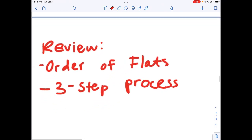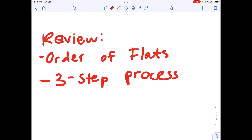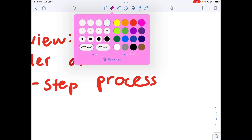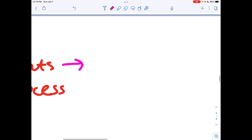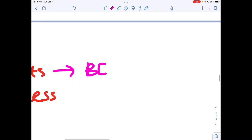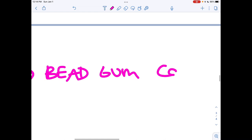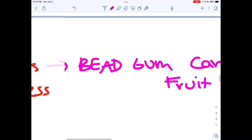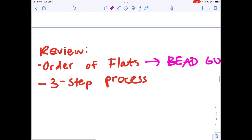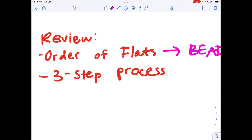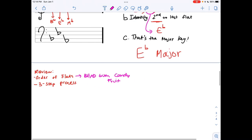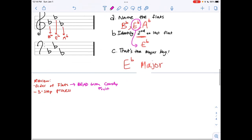To review, we have the order of flats and the three-step process. The acronym that we use for the order of flats is BEAD Gum Candy Fruit. Our three-step process is actually really just a two-step process: you identify your flats, and then you pick your second to last flat, and that's pretty much it.